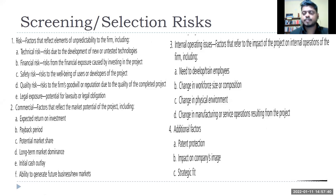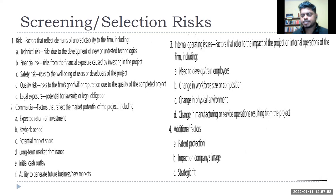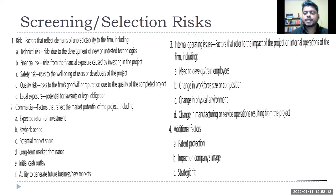Safety risk: construction projects, dams, bridges in hilly areas — these need safety evaluations and potentially additional spending to initiate. Quality risk: if you have a damaged product, like in automobile or mobile phone development where the product development cycle has been reduced to every six months for a new version — what kind of quality checks and quality assurance projects do you need to implement?